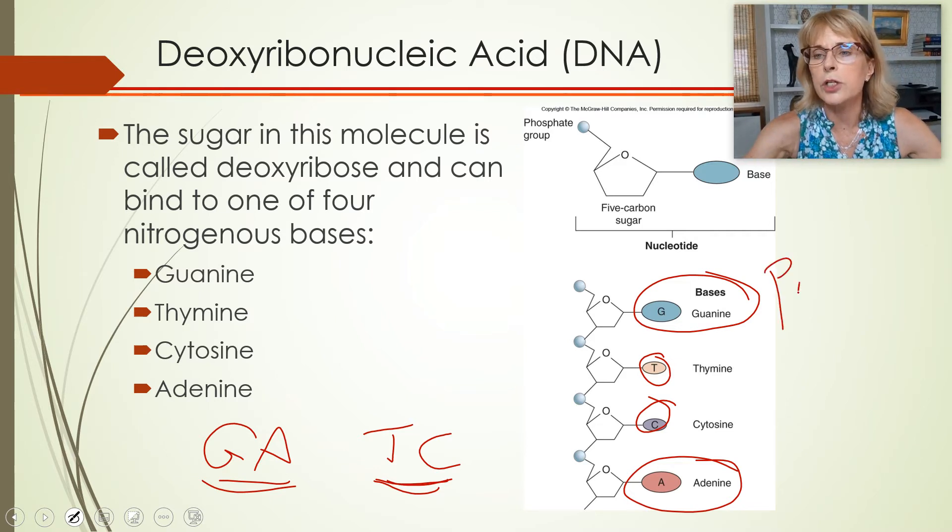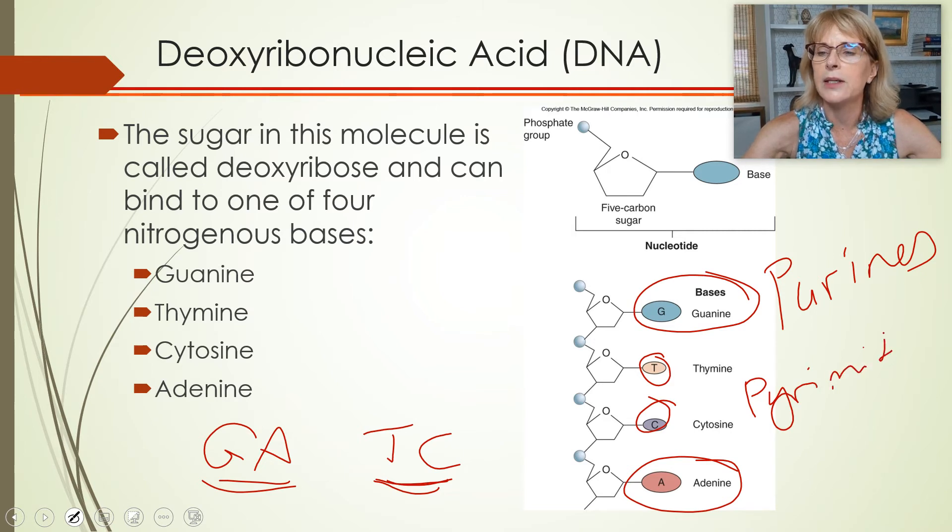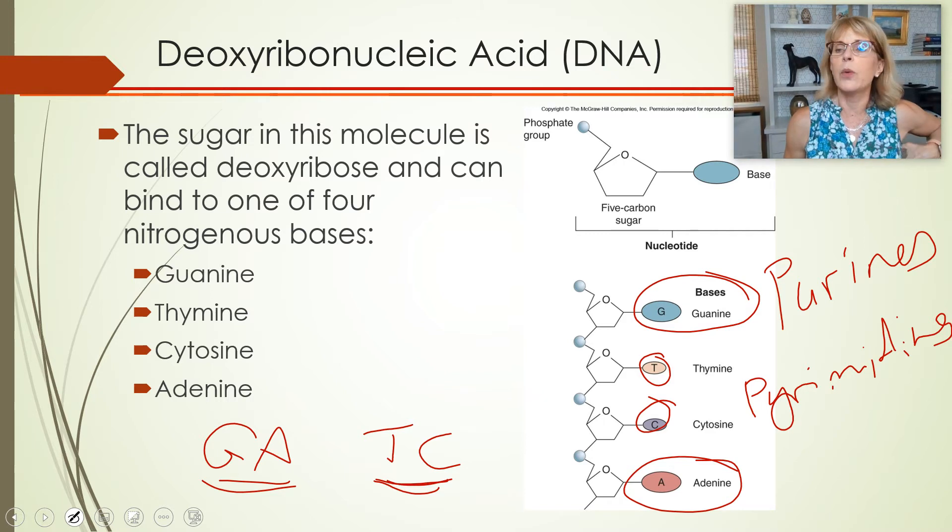The larger nitrogenous bases are called purines, and the smaller ones are called pyrimidines. And the way I remember this is the larger word is the smaller base, and the smaller word is the larger base. Gattaca.